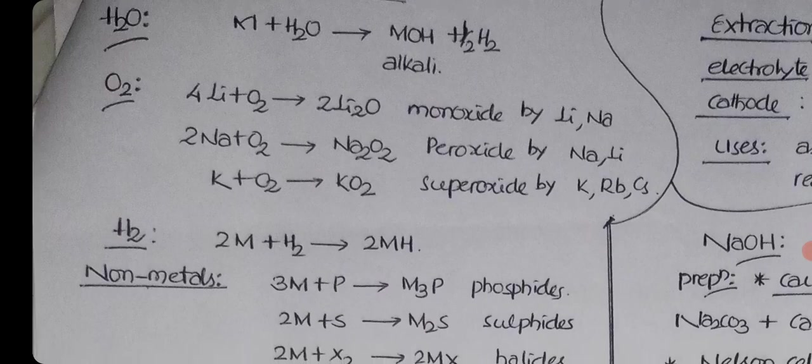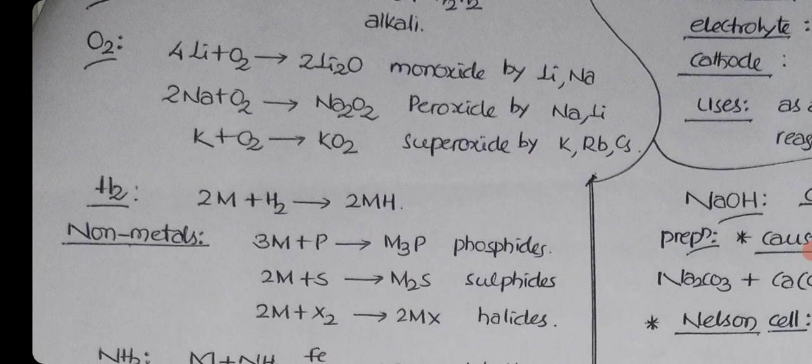As the size of the atom increases, the tendency to form superoxides increases. Superoxides are paramagnetic in nature. Superoxides are useful for production of oxygen in submarines. Lithium only monoxide, sodium peroxide also, potassium, rubidium, cesium superoxide also.